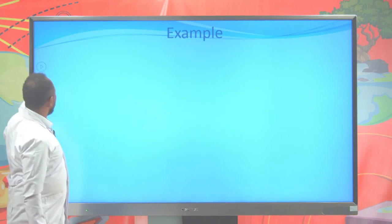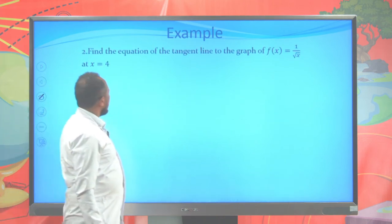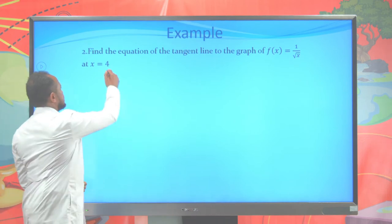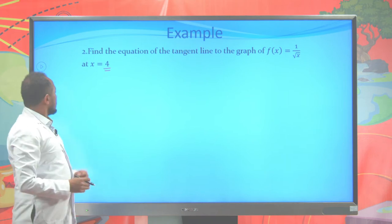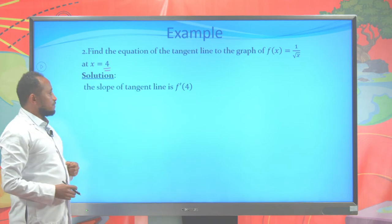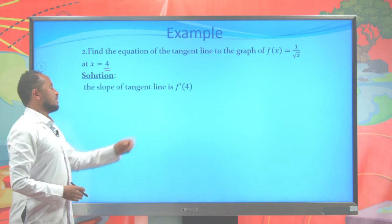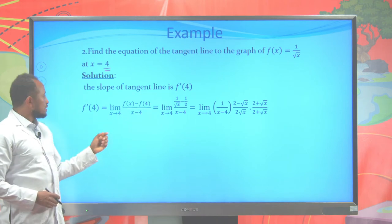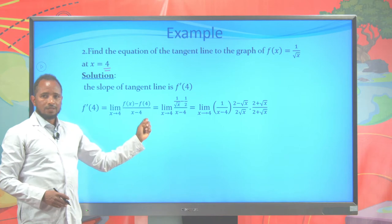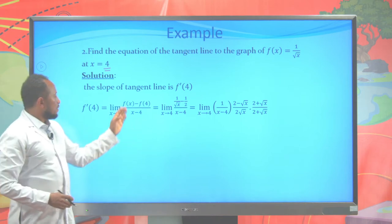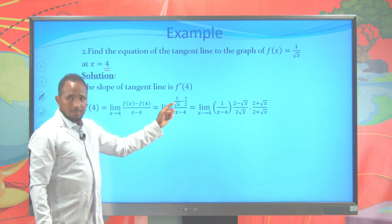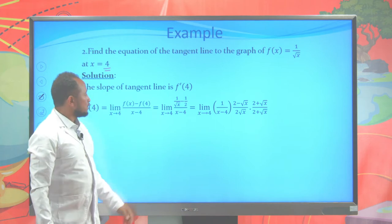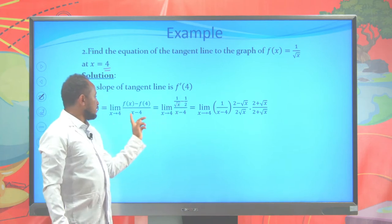Let's see another example. Find the equation of the tangent line to the graph of f of x equal to 1 over the square root of x at x equal to 4. To write the equation, we need the slope at 4, which means f prime of 4. f prime of 4 is the limit of f of x minus f of 4 over x minus 4, where x approaches 4. f of x is 1 over square root of x, and f of 4 is 1 over square root of 4, which is 1 over 2. So we have 1 over square root of x minus 1 over 2, divided by x minus 4.